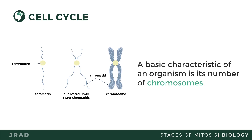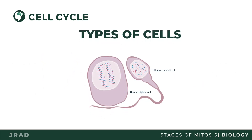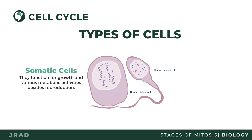The chromosome is just a condensed version of chromatin. Cells can be grouped into two types: somatic and sex cells. Somatic cells are meant for growth and various metabolic functions besides reproduction.